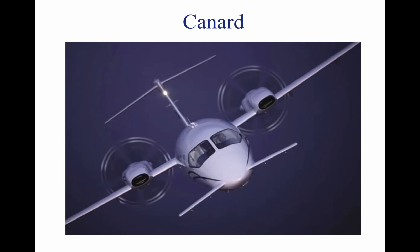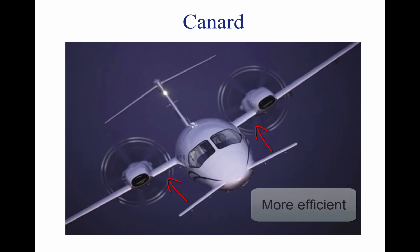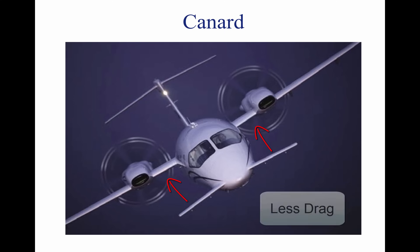The canard design places a horizontal stabilizer in the front of the plane before the main wings. The canard actually produces lift to keep the nose up, which is theoretically more efficient than using the horizontal stabilizer surface to lift the nose up, resulting in less drag for a given amount of lift.